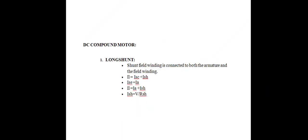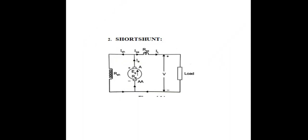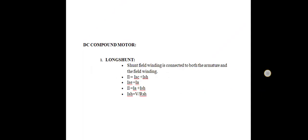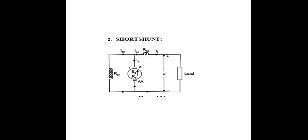DC compound motor — long shunt motor: the shunt field winding is connected to both armature and series field winding. Short shunt motor: the shunt field winding is connected to the armature winding only.